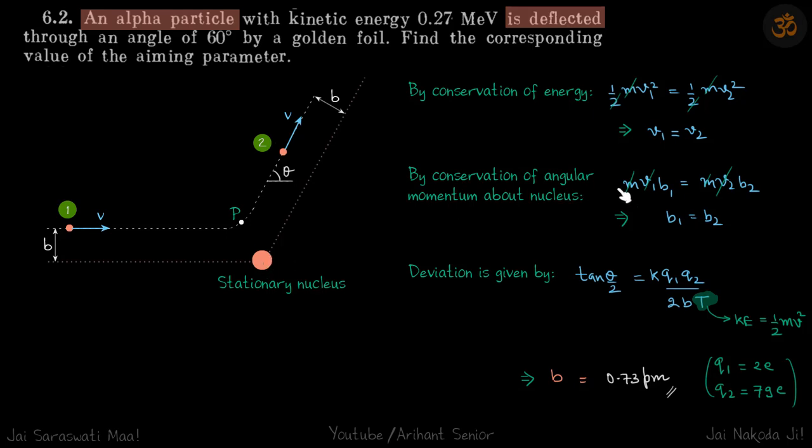We can write: initial angular momentum equals final angular momentum. Initial is mvb, and final is mvb₂. This gives b₁ = b₂, which means if the aiming parameter is b, then eventually this distance is also b. So two important things: first, the velocity remains the same; second, the aiming parameter equals the departing parameter.